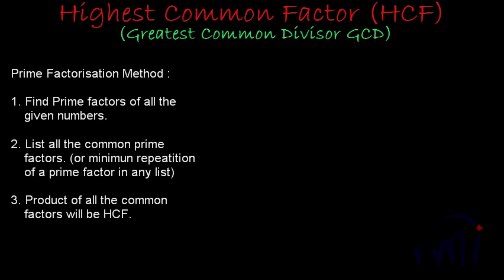Suppose if you want to find the highest common factor of 36 and 24, the first step of finding the HCF is to find the prime factors of all the given numbers. So first I will find the prime factors of 36.